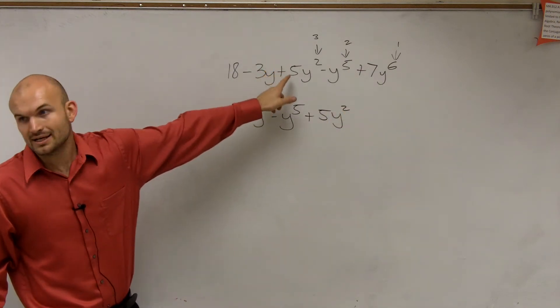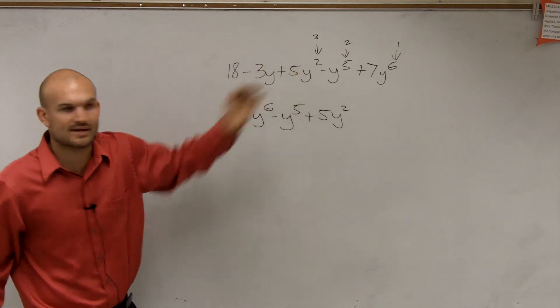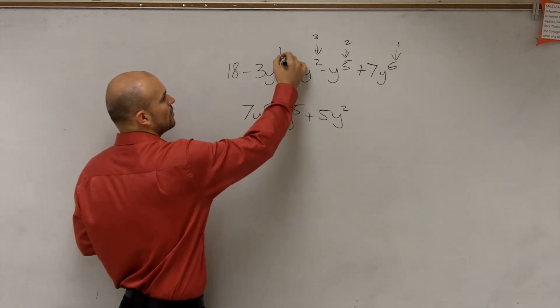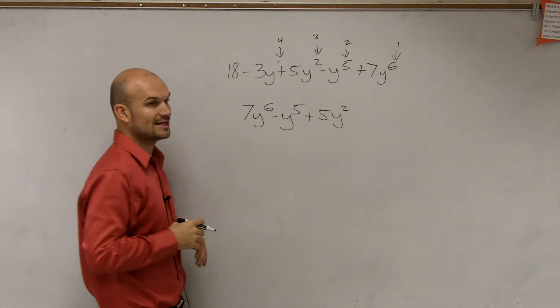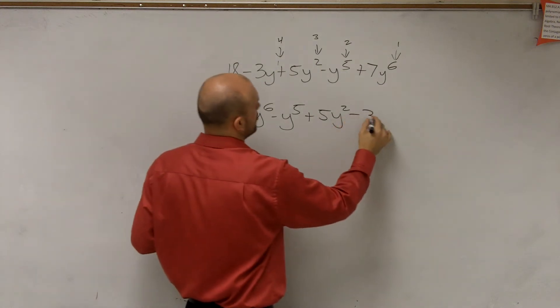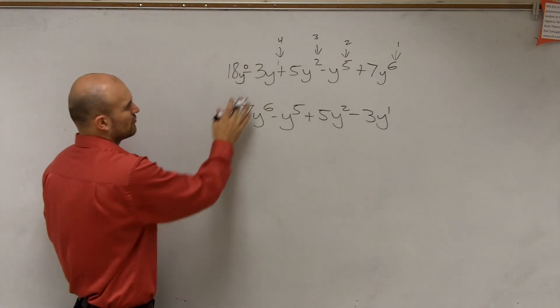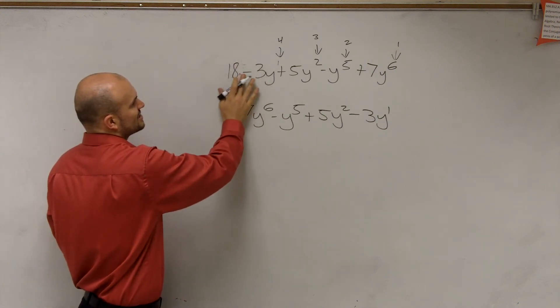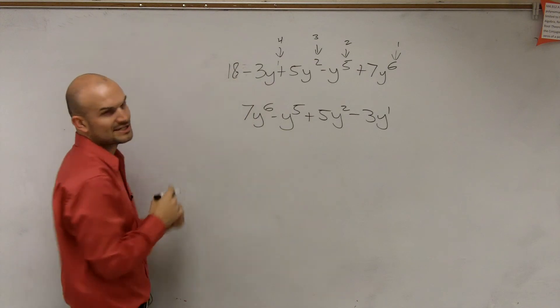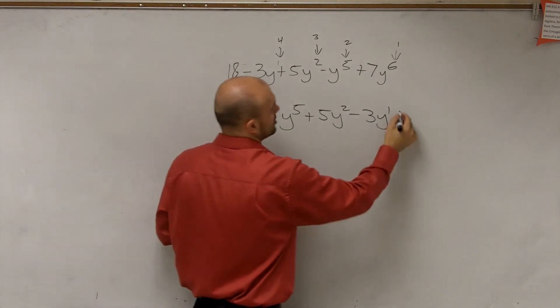Then y, when we don't have it raised to a power, we don't show it being raised to a power. We know it's being raised to a 1, so that would be your next largest. So you take the whole monomial. And then this can really be raised to y to the 0, which we don't write, but we just notice that's going to be my last term, which is my constant, plus 18.